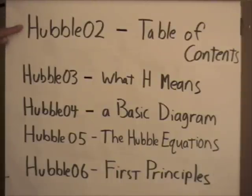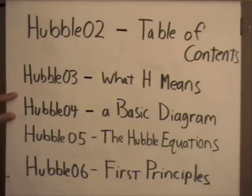These are the next videos coming up in the series. A table of contents for the entire series. What the Hubble constant means. A basic diagram, which is an important video because it will give you an easy to use, an easy to visualize diagram to visualize what's going on in discussions of the Hubble constant. The Hubble equations. And then Hubble 06 first principles. I recommend going through these in this order. But non-physicists might want to jump down and look at this video first because this video has a bunch of fun stuff in it about the expansion of space, what it means, and how it works. And then after watching that video, come back up to these first ones.